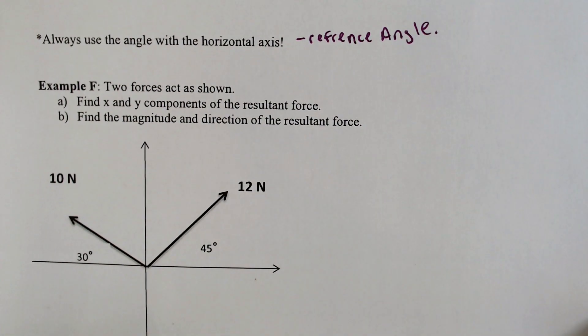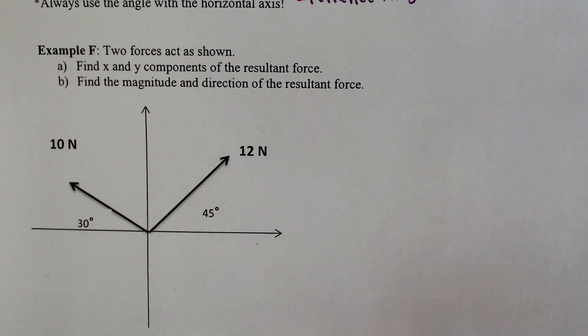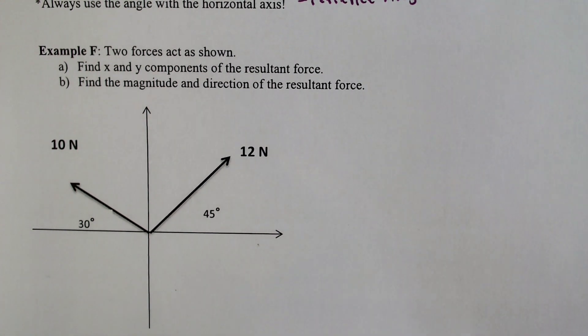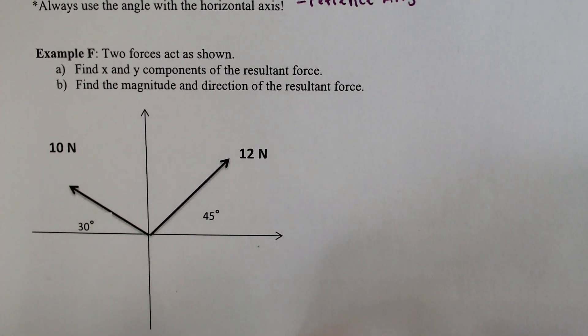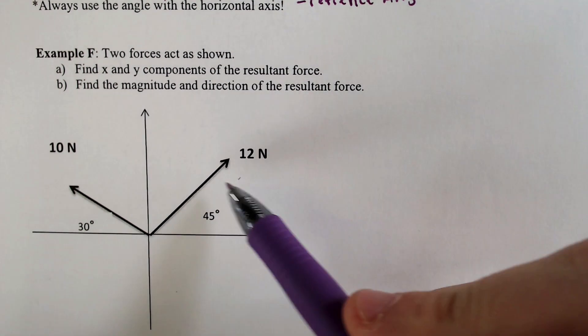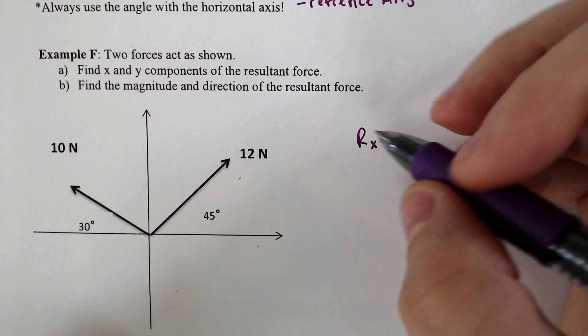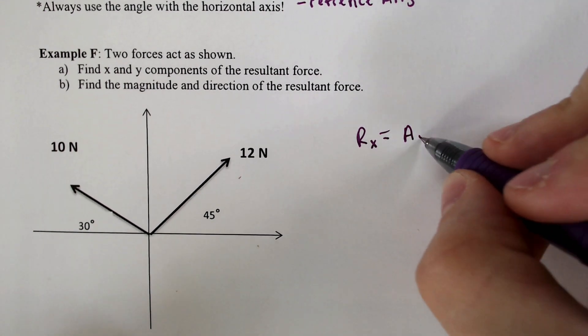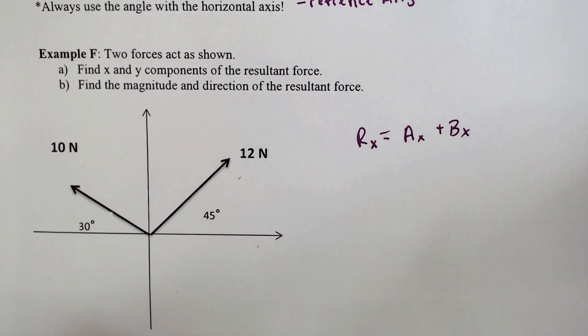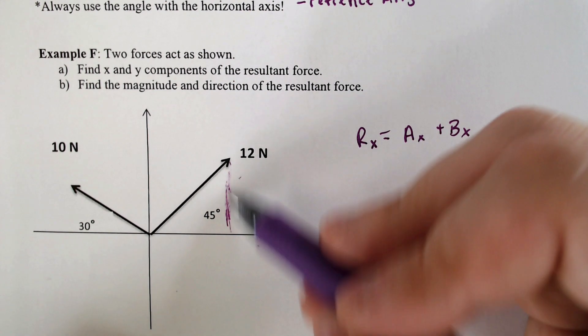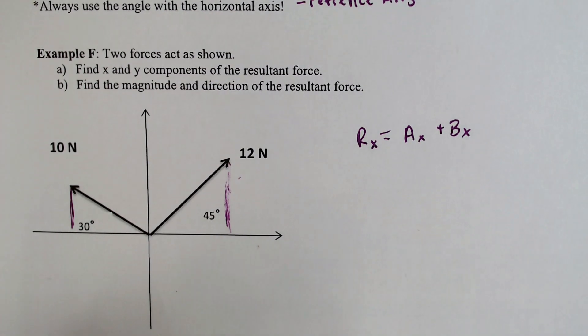The harder problems for today are two forces that act on as shown. If we want to find the x and y components of the resultant force, we would need to do some work. We need to find the magnitude and the direction of the resultant force as well. So in order to do this, we need to essentially add these two things together to find the x and y components of the resultant force. In order to do that, you need to find the resultant force of the x component, would be the force of the x for A and the forces of the x for B. Okay? So what that means is you need to find the x value for this guy, the 12 newton one, and the x value for the 10 newton one, and then add them together.